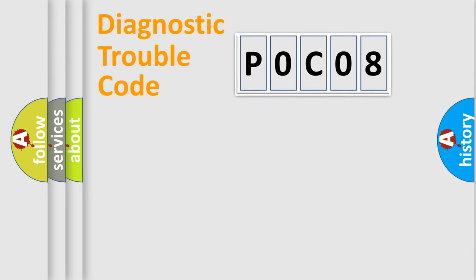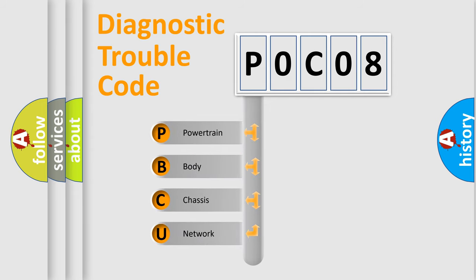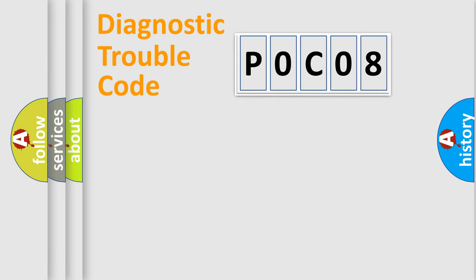First, let's look at the history of diagnostic fault code composition according to the OBD2 protocol, which is unified for all automakers since 2000. We divide the electric system of an automobile into four basic units: Powertrain, Body, Chassis, and Network. This distribution is defined in the first character of the code.